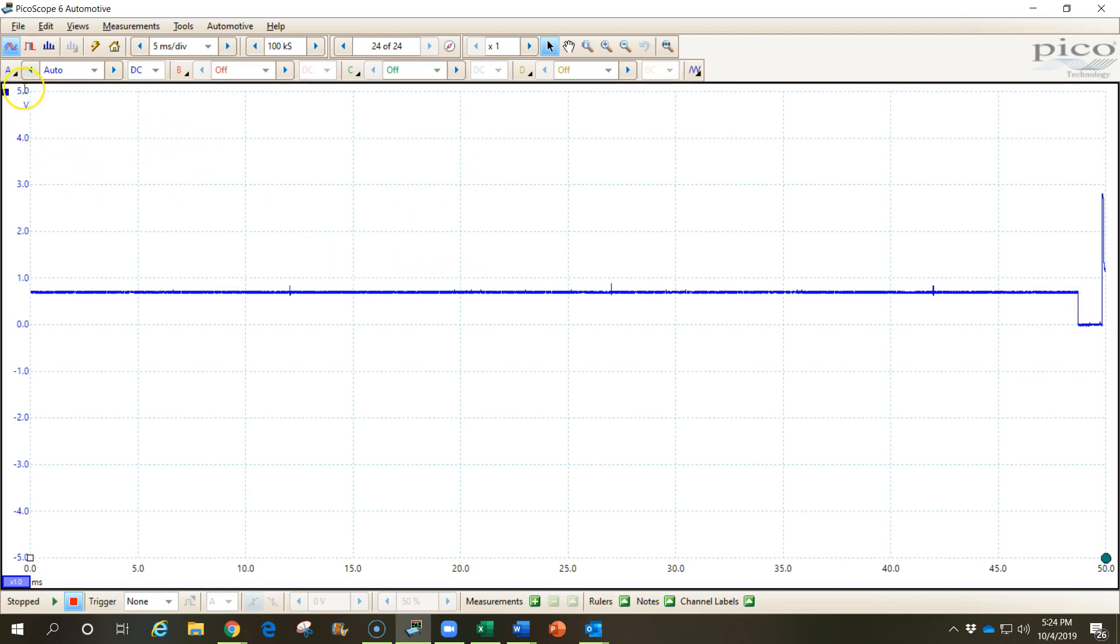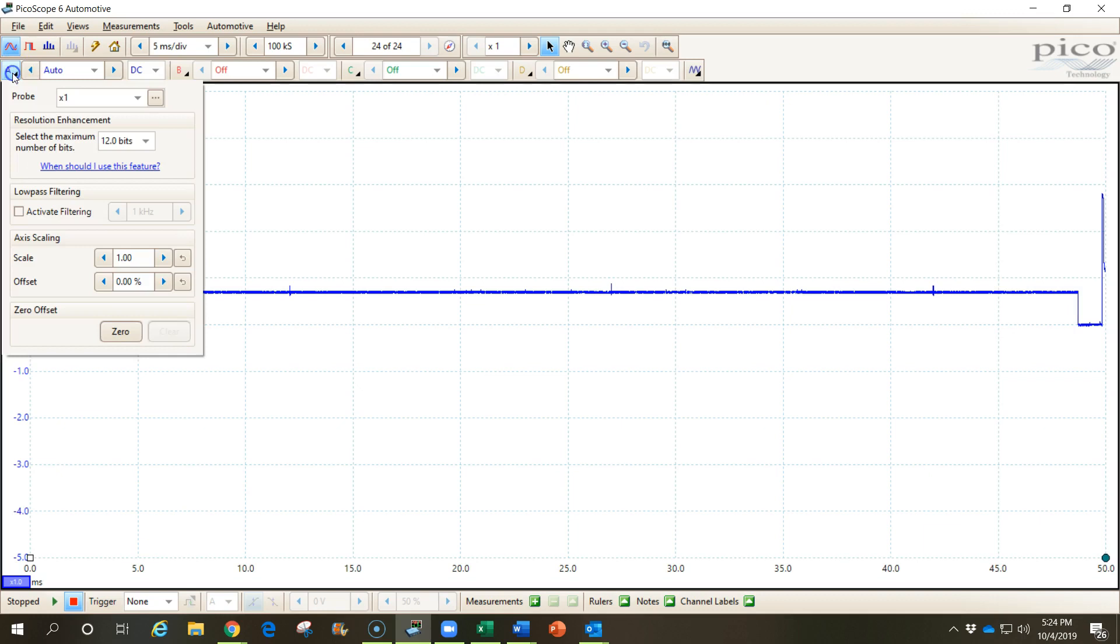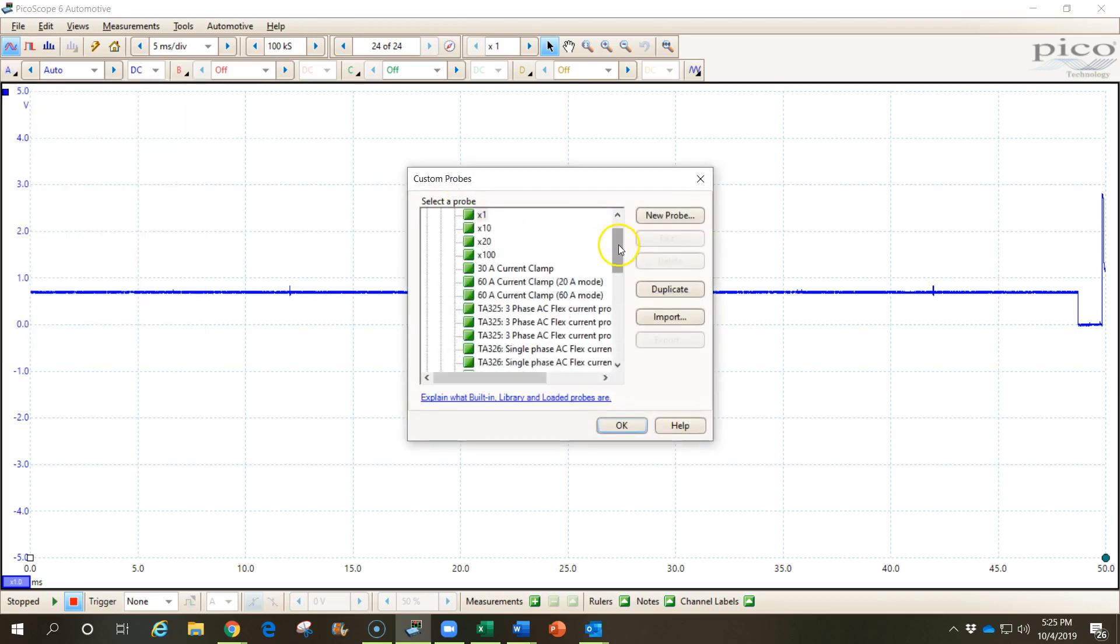And in the PicoScope software, we can do this by coming over here and choosing a probe for one of our channels. But rather than choosing a probe, hit this little button right here, which opens up our probe library. And we can see that we have all kinds of probes that are in here already. Some of them I've created and some came with the software. So we're going to create a new probe. So I click on this button.